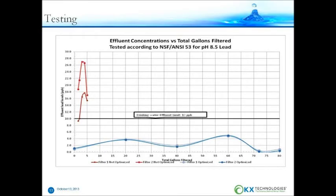The influent water was injected with approximately 150 parts per billion of lead, of which about 30% was particulate, according to the ANSI standard. The failure point, according to the drinking water standard, is 10 parts per billion in the effluent. The normal cartridges not designed to remove complex heavy metal solutions failed almost immediately. The filter optimized to remove these complex solutions lasted greater than 80 gallons, showing great possibility for this type of filtration system to remove heavy metals, whether soluble, particulate, or complex.